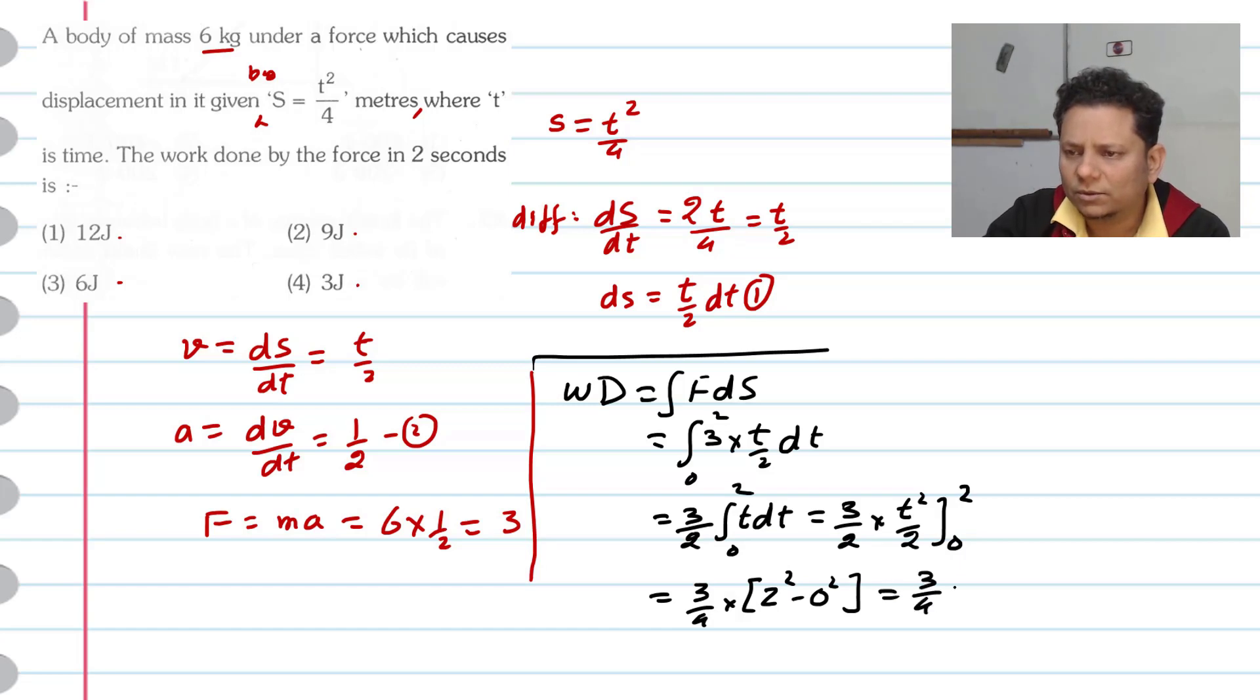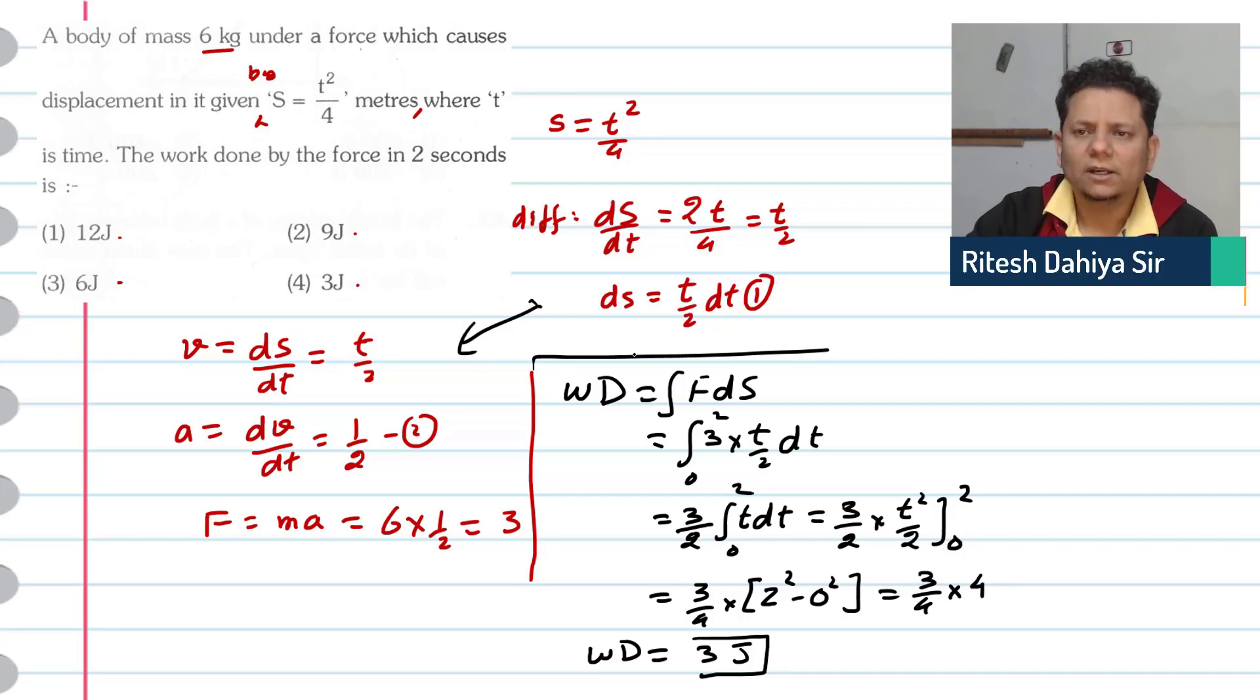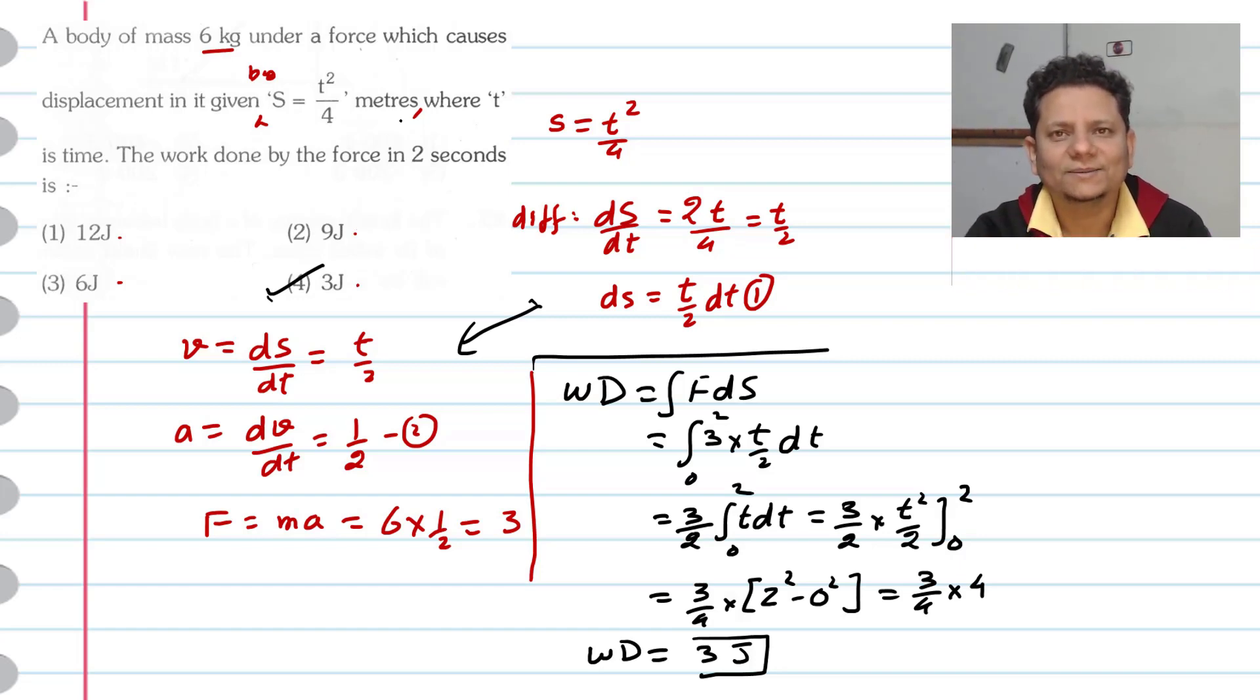This will be equal to 2 squared minus 0 squared, which gives us 4. So this equals 3/4 multiplied by 4, which means the work done equals 3 joule. In this case, since the direct value of F was not given and the direct value of ds was not given, we had to take a slightly longer path. So the question is lengthy, but not difficult. 3 joule, option number 4, would be the right answer. I hope you got the solution.